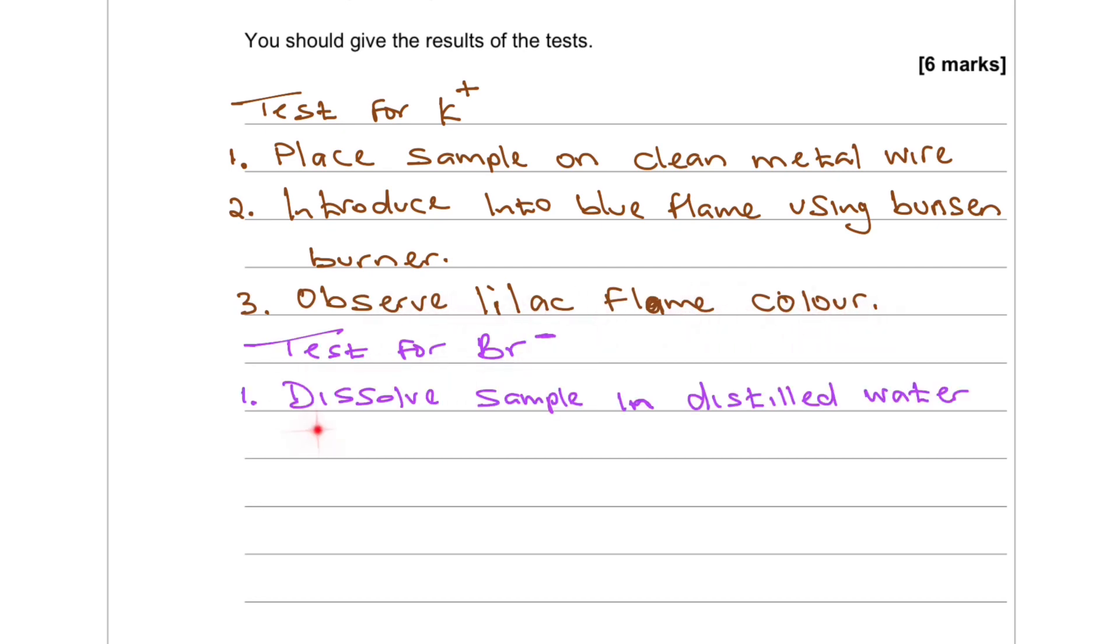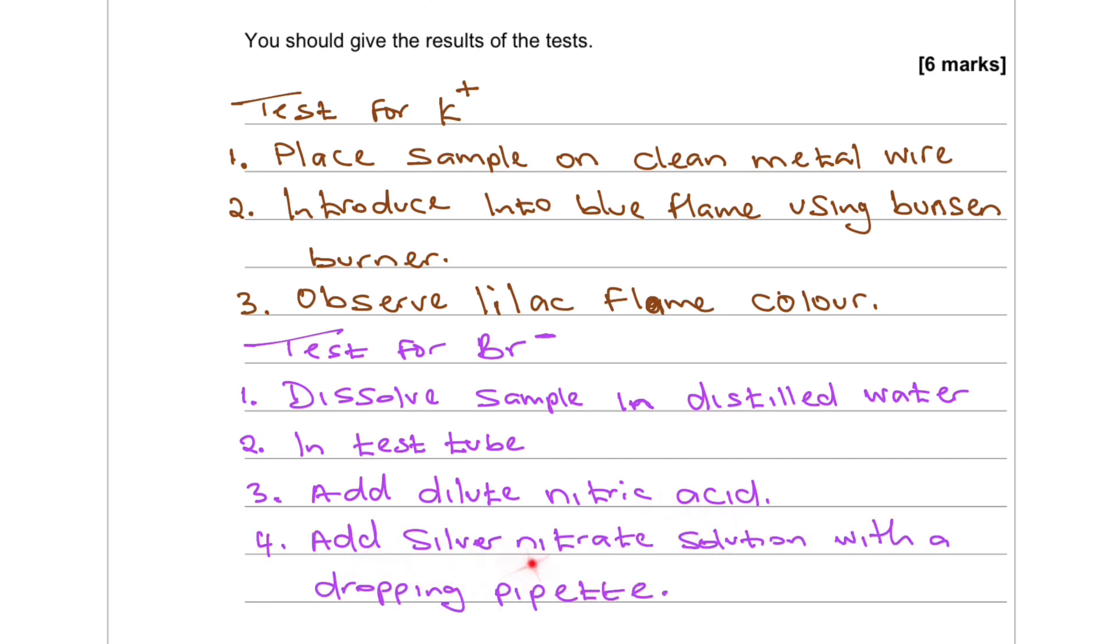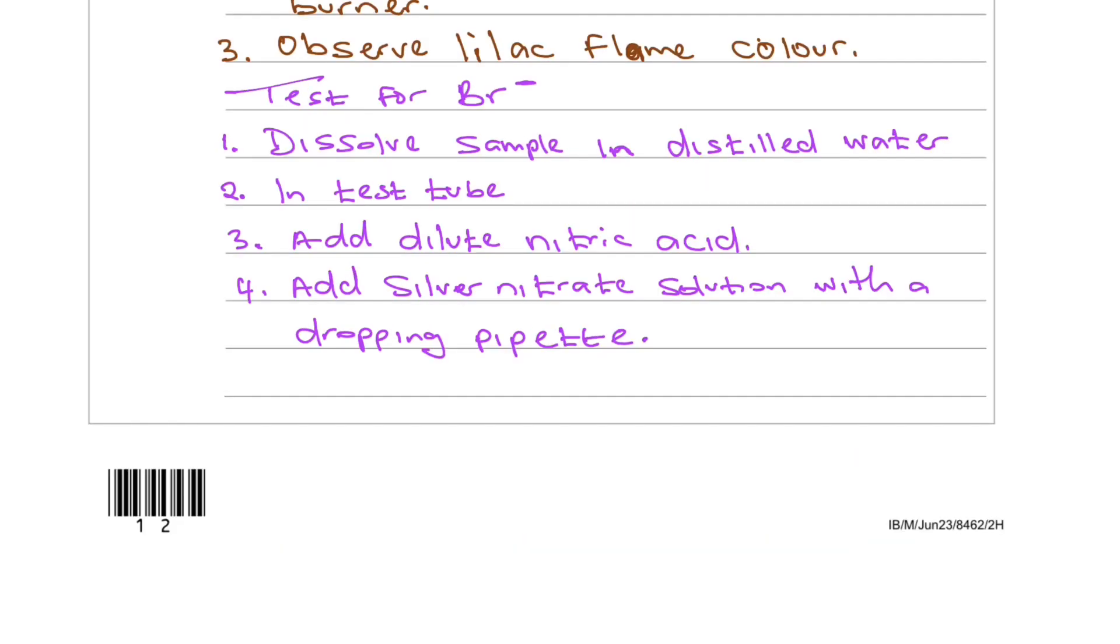Test for bromide ion: 1. Dissolve sample in distilled water. 2. In a test tube. 3. Add dilute nitric acid. 4. Add silver nitrate solution with a dropping pipette. 5. Observe cream precipitate, which indicates the presence of bromide ions.